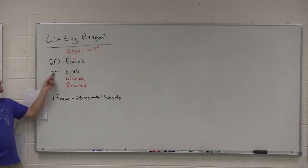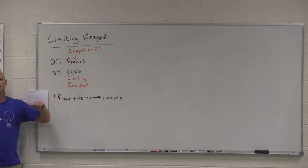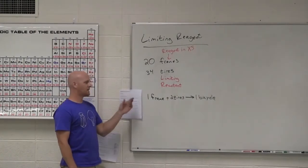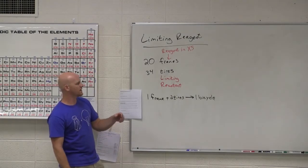If I have 34 tires and it takes two tires to do this process, how many times can I do this process? 17. Whichever one you can do less times, that's your limiting reactant.